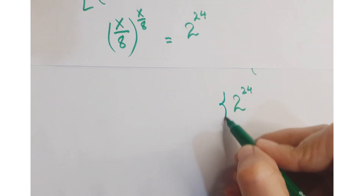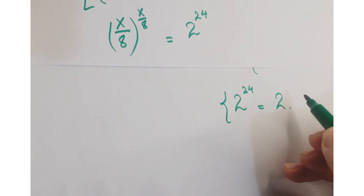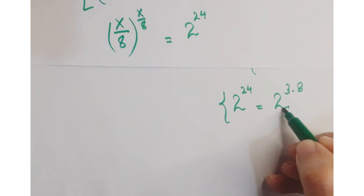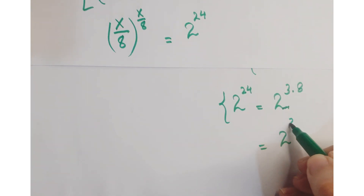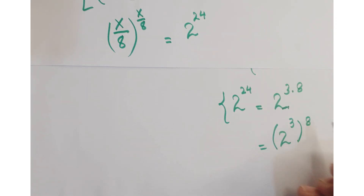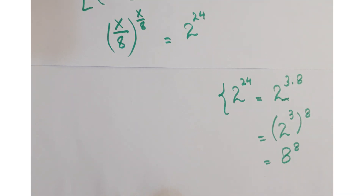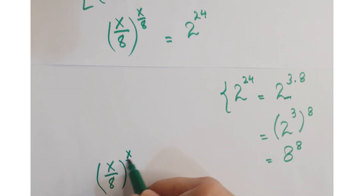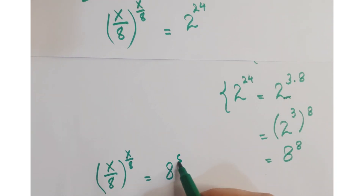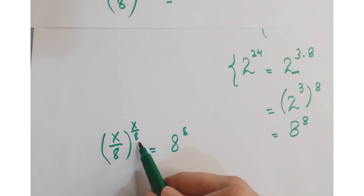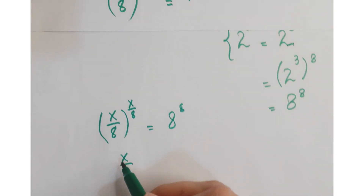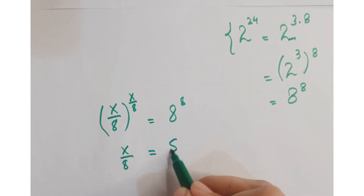You can write 2 to the power 24 as 2 to the power 3 into 8, and this is further written as 2 to the power 3 whole to the power 8, or 8 to the power 8. Now, replacing it in the equation, you get x upon 8 whole to the power x upon 8 is equal to 8 to the power 8. Here we have the same bases and the same exponents, so we can just equate them: x upon 8 is equal to 8.